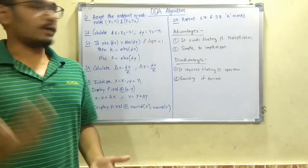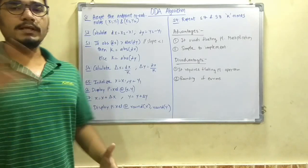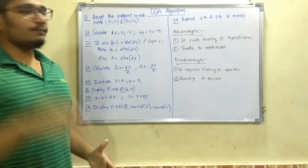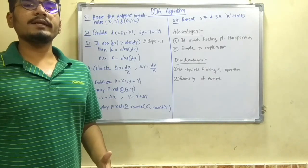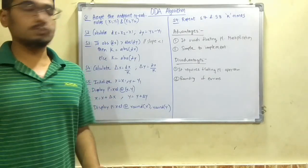So let's get started. First of all, we have to accept the endpoint coordinates. We will be given two endpoint coordinates or two sets of endpoint coordinates like x1, y1 and x2, y2.